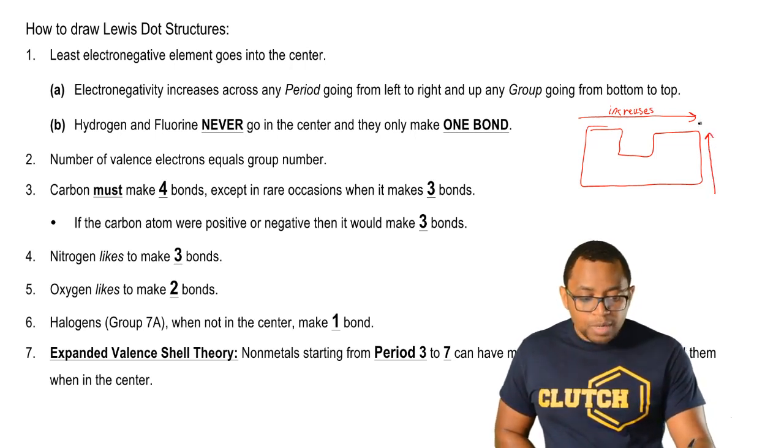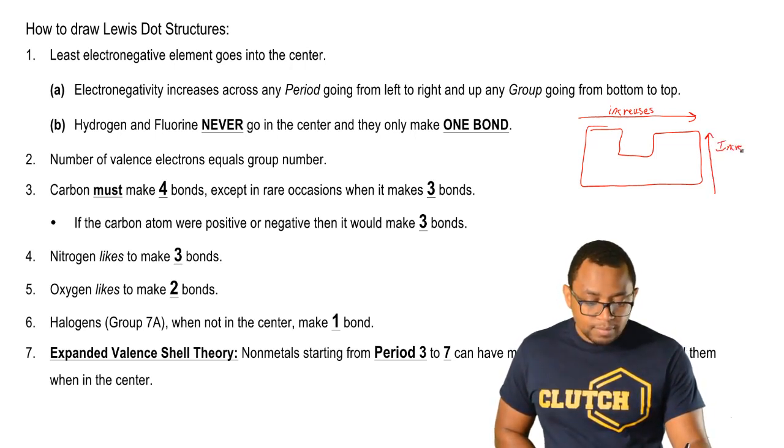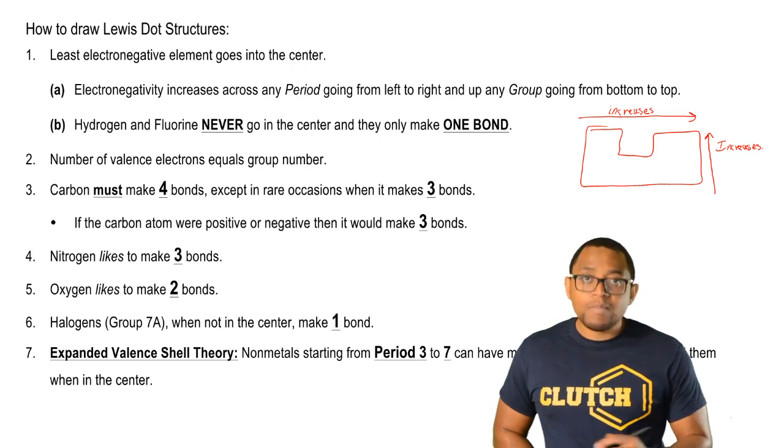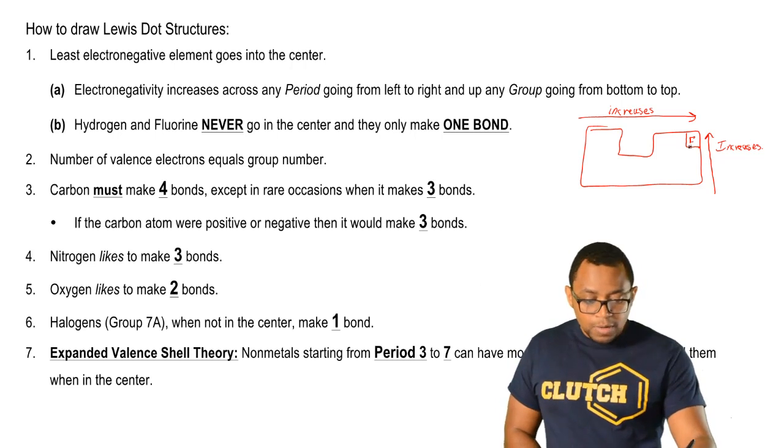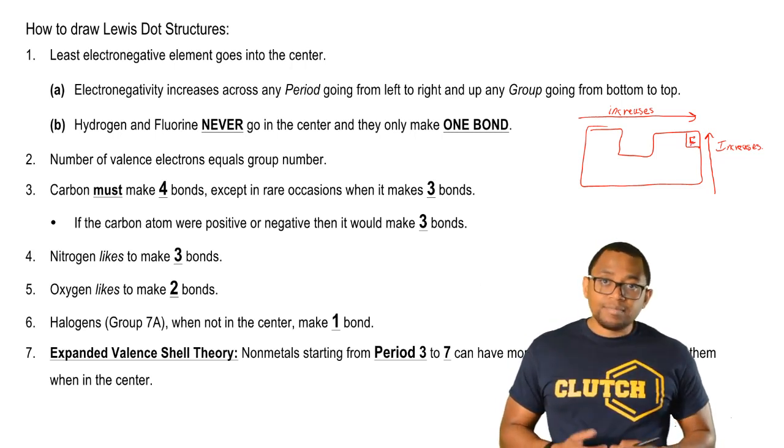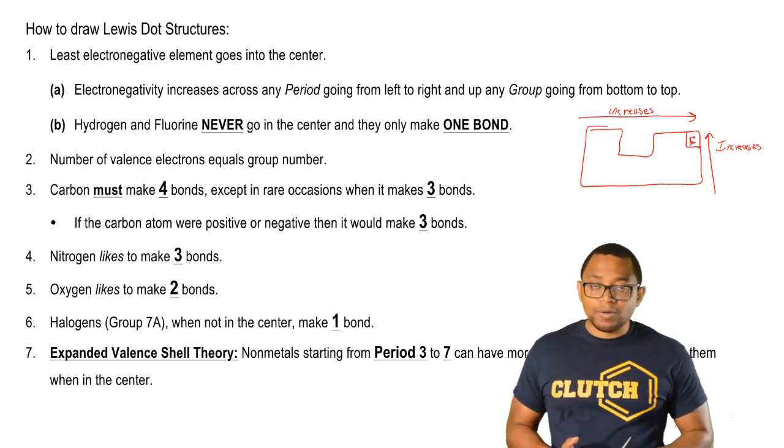As we go up any group, it also increases. Remember, the most electronegative element on the periodic table is fluorine itself. We know that fluorine will never go in the center because it's the least electronegative element that goes in the center.